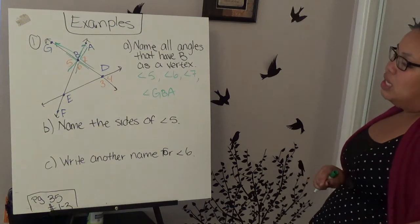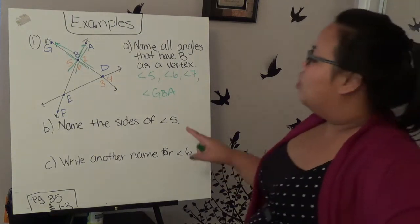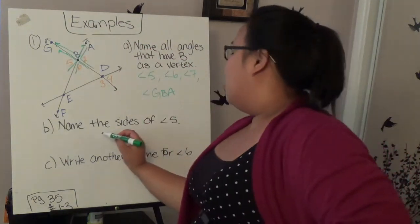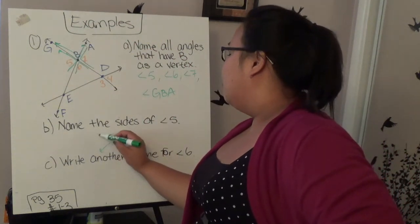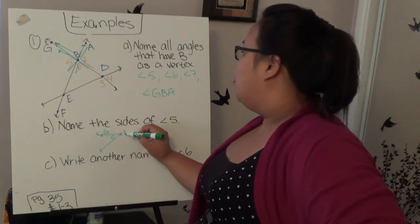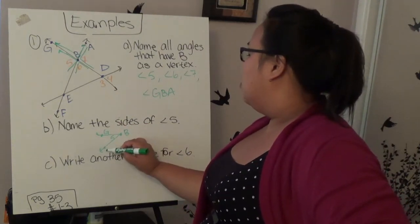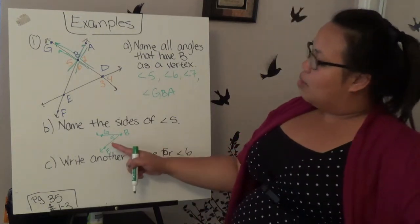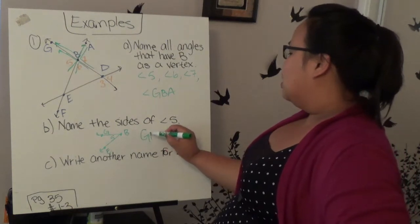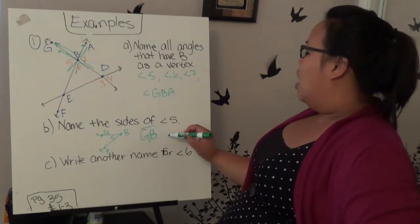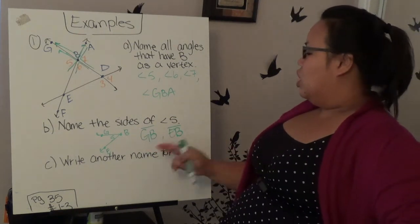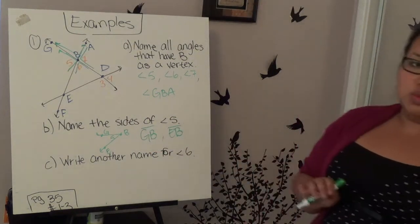The second question is name the sides of angle 5. So let's locate angle 5, which is right here. Here's angle 5. Here's G, here's B, and here's E. So the sides are the two points that make up the ray of the angles. So side GB is one side, and also, side EB. Or it can be any order, it could be BG or BE, but as long as I use those two points.